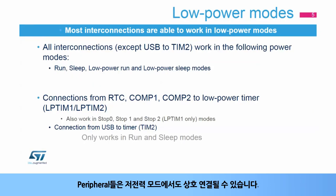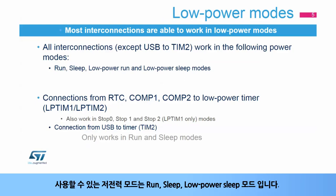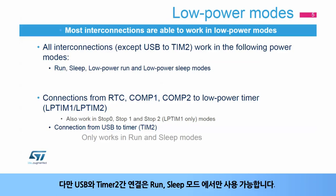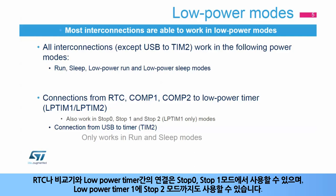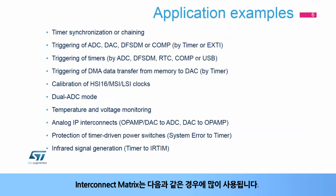Peripherals can be interconnected using the interconnect matrix even when the circuit is in a low power mode. The low power modes that can be used are run, sleep, and low power sleep modes, except for the USB to timer 2 connection, which can only be used in run and sleep modes. The connections from the real time clock or comparators to low power timers can also be used in stop 0, stop 1, and stop 2 modes for low power timer 1.